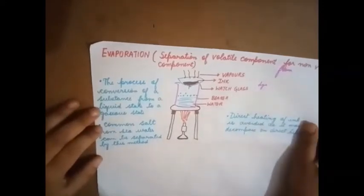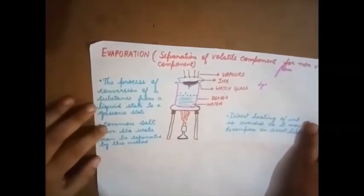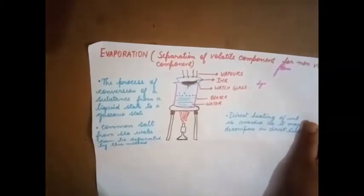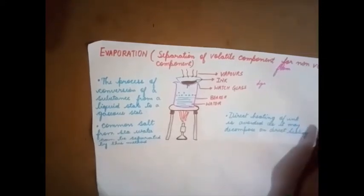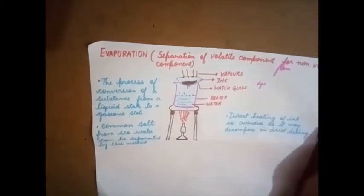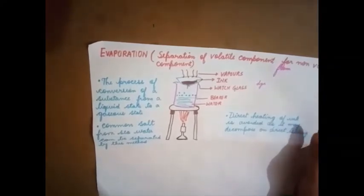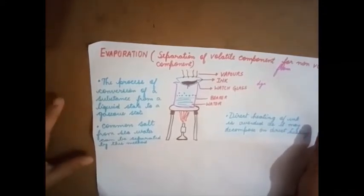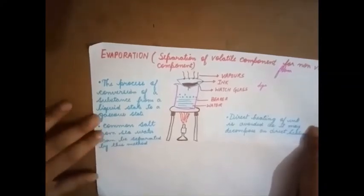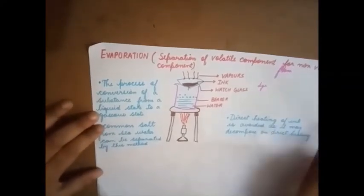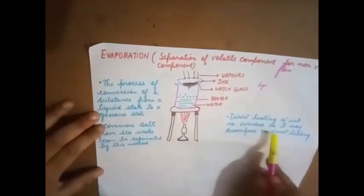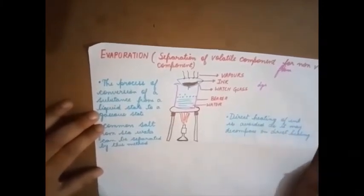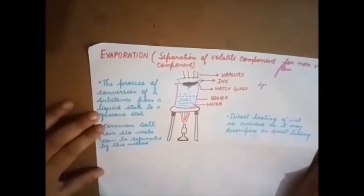Another example for evaporation would be common salt from seawater can be separated by this method. We can take seawater and put the seawater in a shallow pond and leave it in presence of sunlight for a long duration of time. We see that water gets evaporated leaving the salt behind. This is another example for evaporation. Direct heating of ink is avoided as it may decompose on direct heating.